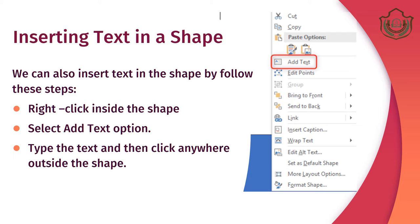How to insert text in a shape? You can also insert text in a shape. To do so, follow these steps: right-click inside the shape and select the Add Text option. Then type the text and click anywhere outside the shape.